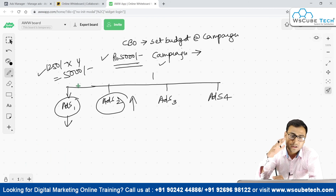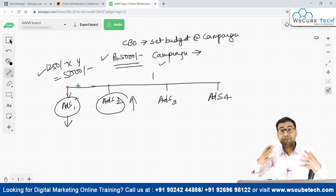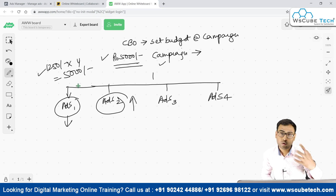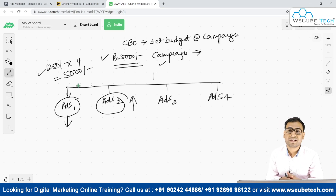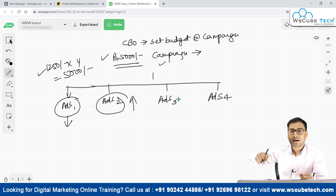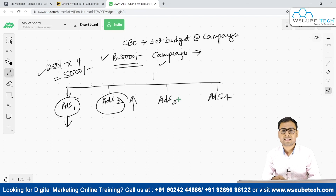This is how CBO works. One important thing: CBO is not 100% guaranteed to work in every case. You have to test both the default settings and the CBO settings to see which works best for you. Another application of CBO is scaling campaigns, which we'll discuss later. The basic concept is that Facebook's system automatically distributes your campaign-level daily budget across different ad sets.